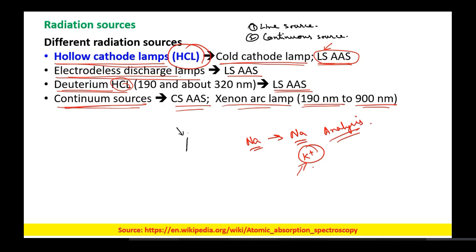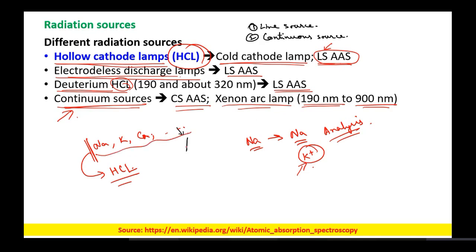On the contrary, if you want to analyze sodium, potassium, calcium, and so on, for each of these elements you will need a specific hollow cathode lamp. That is one disadvantage, but the advantage is there will be no cross influence of other elements in your analysis. In continuum sources like the xenon arc lamp, you can analyze a large number of elements. However, you will get spectral lines for different elements in the same spectrum, making analysis more difficult.